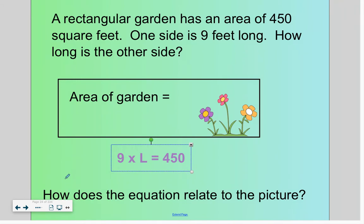So here we have a rectangle with a total area of 450 square feet. If we know one of the side lengths, how can we figure out the other? Well, nine times L is going to give us our area of 450.